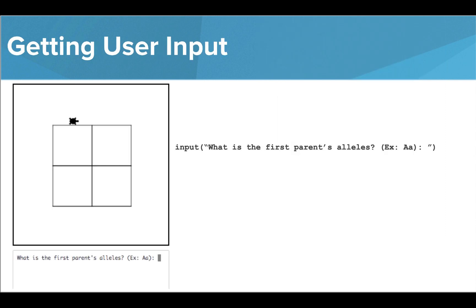We can use the command input to ask the user to enter information that we can use in our program. To write this, we type the word input and then inside parentheses, inside quotation marks, we type the text prompt we want our user to see.